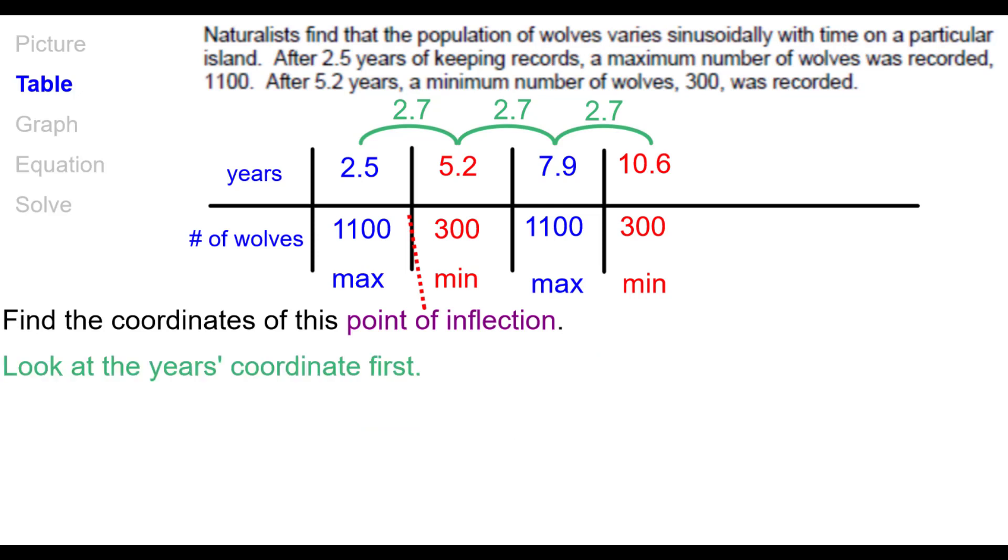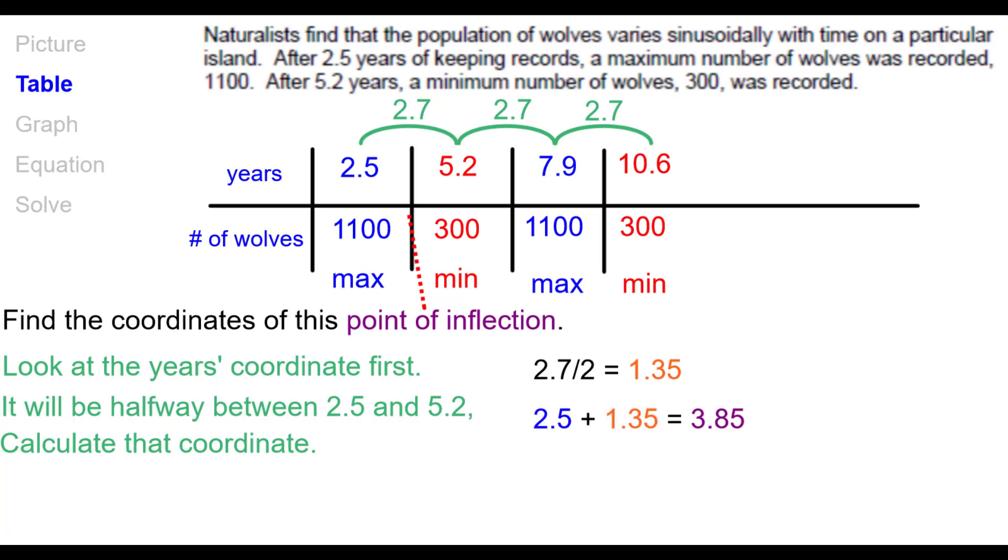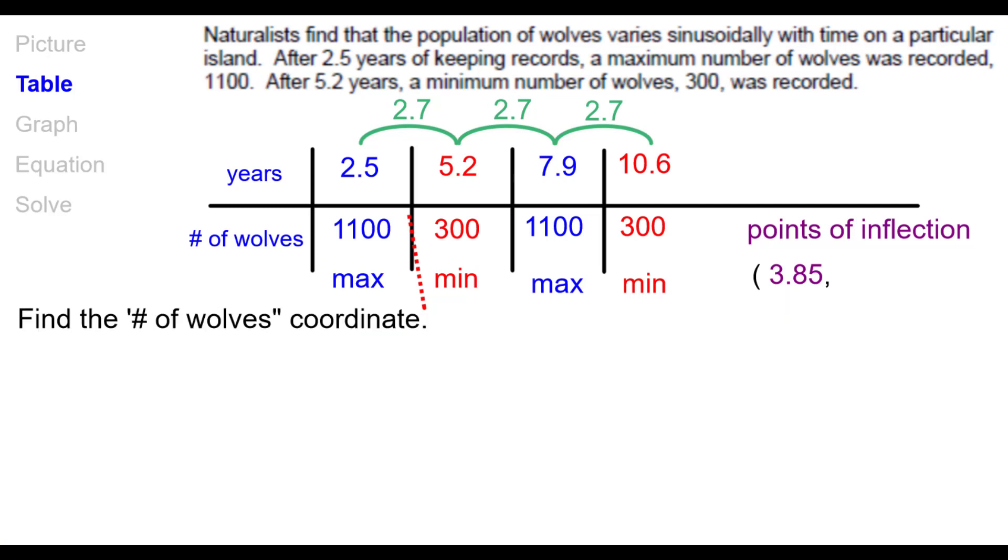All right. So finding those coordinates, we'll look at the year's coordinate first. We know it's going to be halfway between 2.5 and 5.2. So we can calculate that coordinate either by dividing the difference between them by 2 and then adding it to 2.5 or subtracting back from 5.2. And so at 3.85. Or another way would be to just average 2.5 and 5.2 and the middle will be 3.85. So that's the x coordinate or the horizontal coordinate, the year's coordinate. What about the number of wolves? How many wolves will there be at that time? Well, again, halfway between these two numbers, we have to find the average or halfway between, which will be 700. So our coordinates will be at 3.85. There will be 700 wolves and that's a point of inflection.